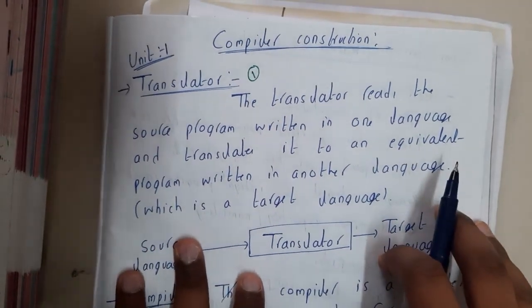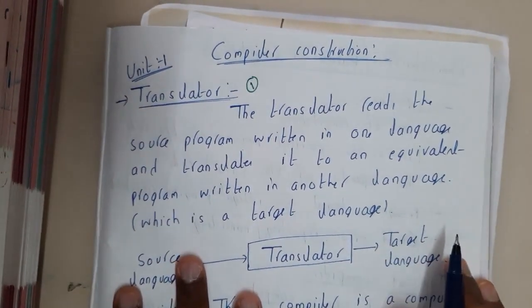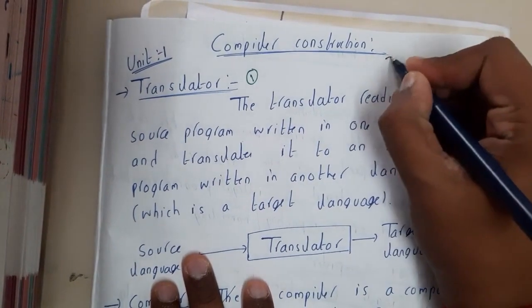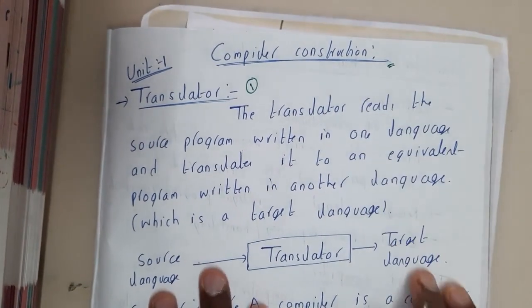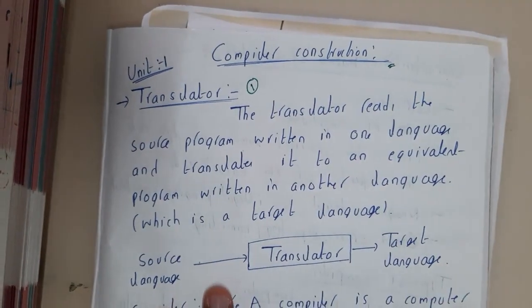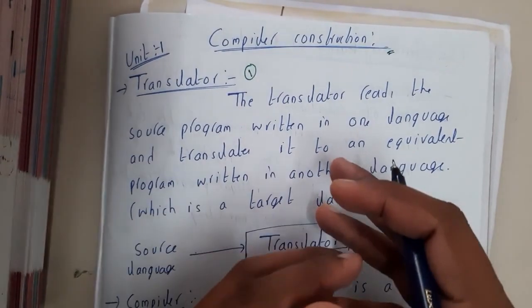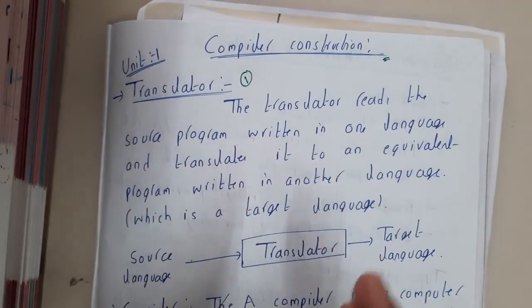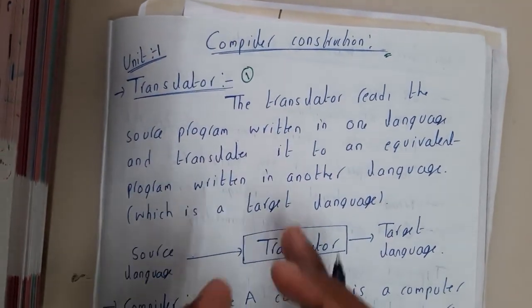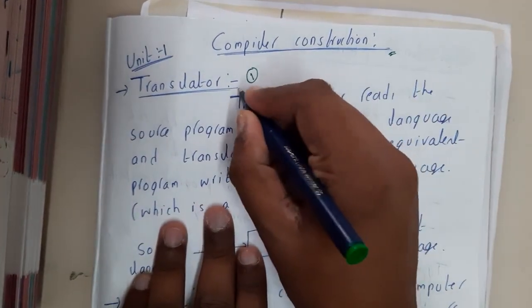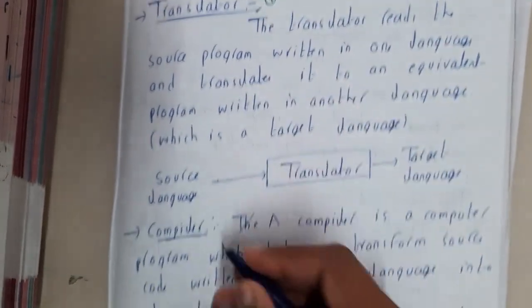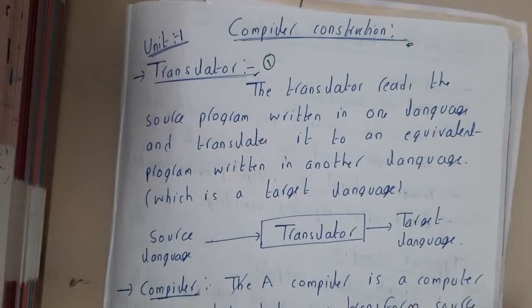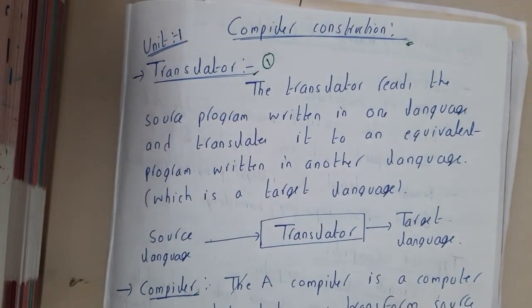Hello guys, we are back with our next set of video lecture series. In this series we are going to start the subject compiler construction. So the first thing we need to understand before going into the subject is the basic terminology. In this lecture we'll be discussing about the translator and the compiler, their definitions with examples, and we will also discuss about the types of compilers.